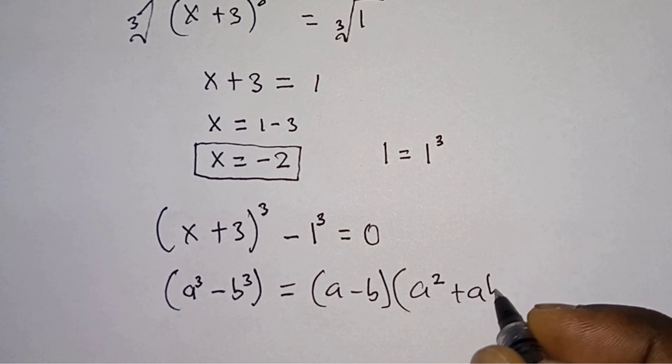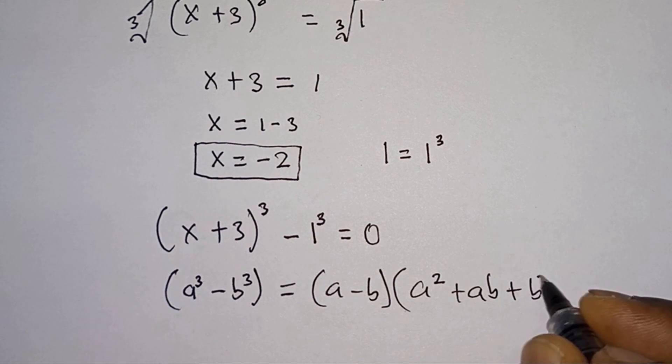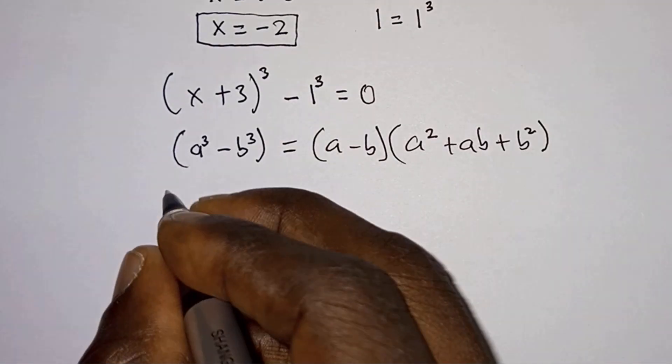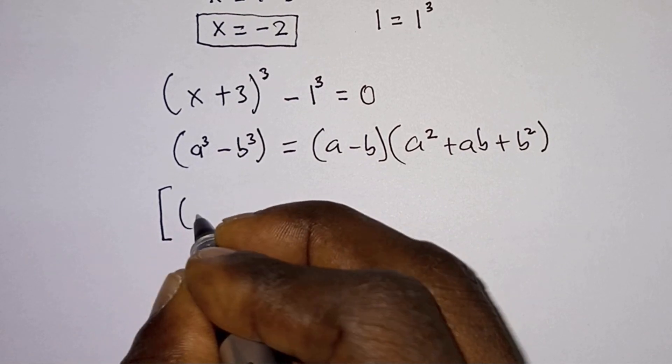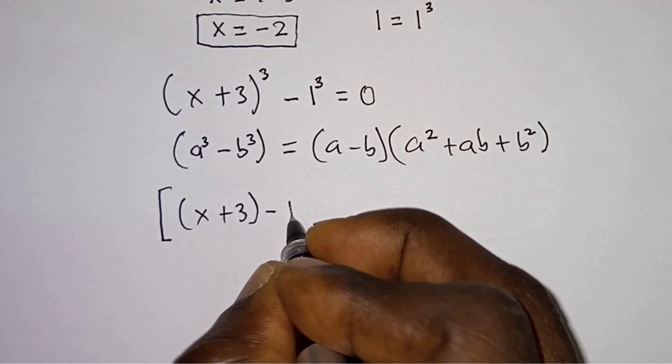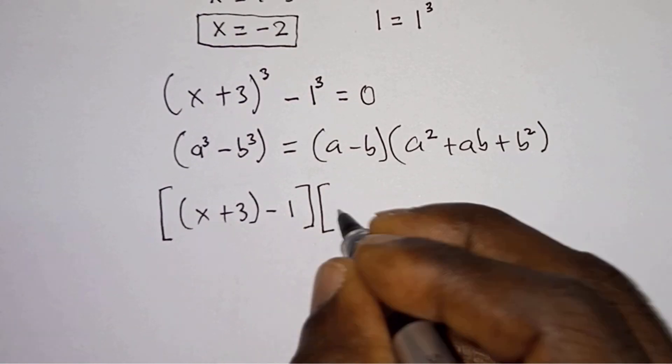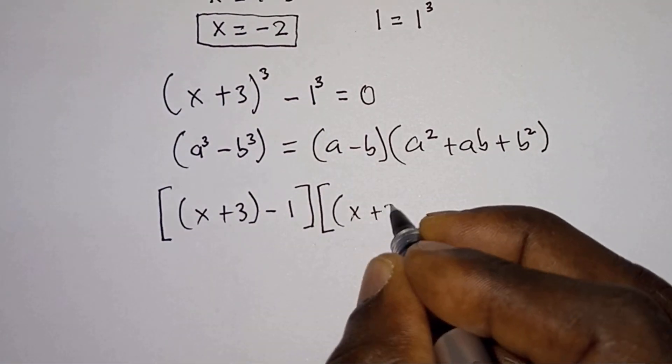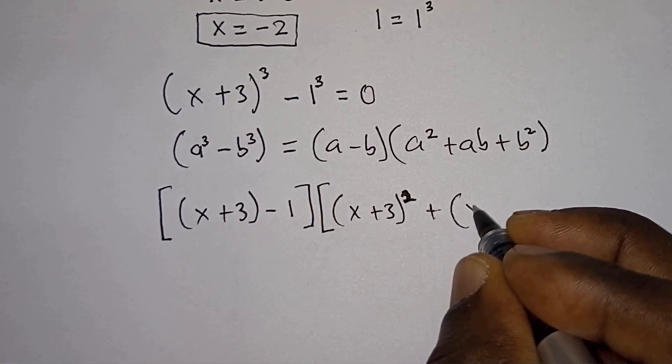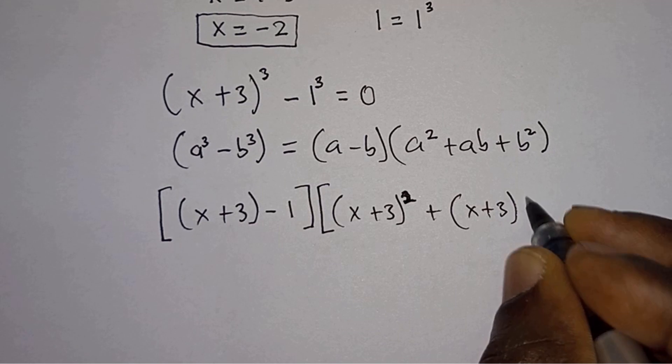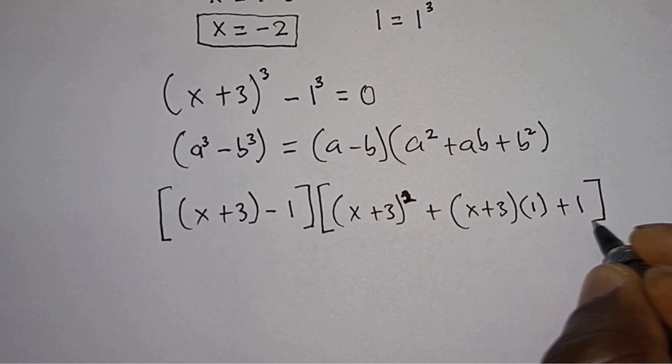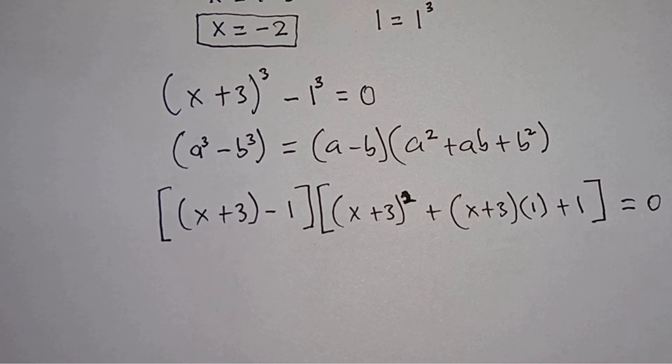So the equation now becomes: x plus 3 minus 1, times x plus 3 squared, plus x plus 3 times 1, plus 1 squared, which is still 1, and this equals 0.